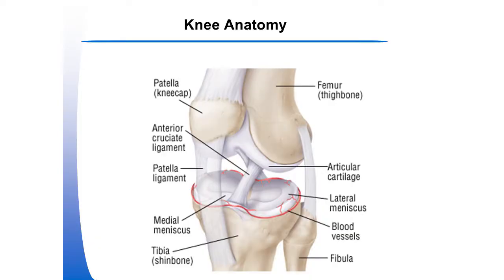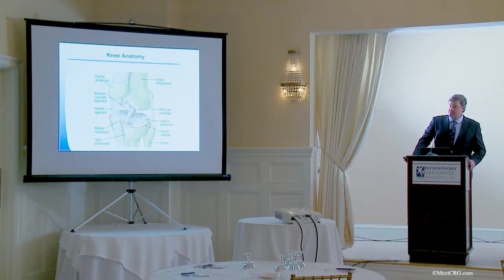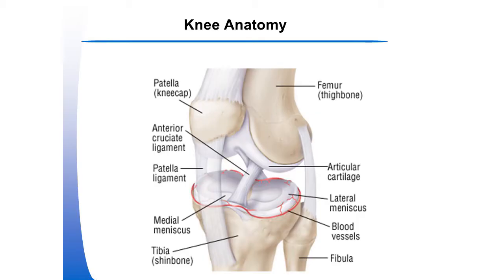Starting with some anatomy, the knee joint is made up of three bones: the femur, the tibia, and the patella — four if you include the fibula. Sources of pain can be among the articular surfaces, the tendons around the bone including the quad tendon and the patella tendon, injuries to the meniscus medial or lateral, and the ligaments. There are four main ligaments: the medial collateral, the lateral collateral, the ACL, and the PCL.